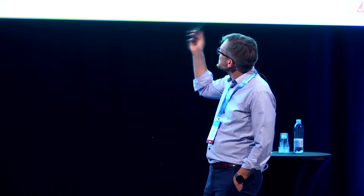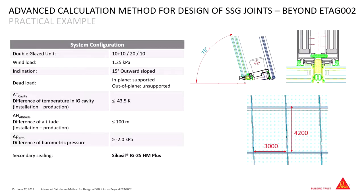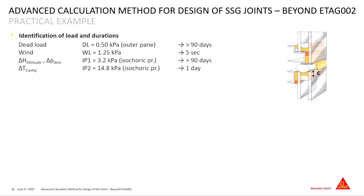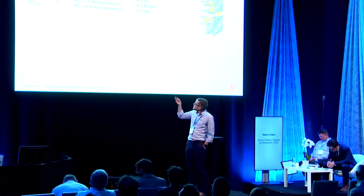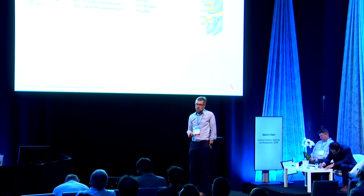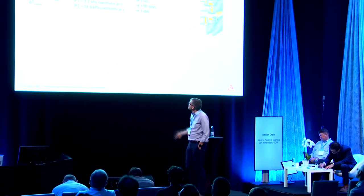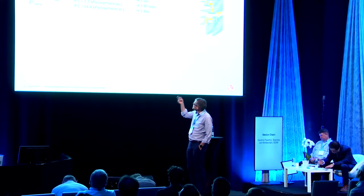As an example — just very quickly — insulating glass, outward sloped at 15 degrees, so at the end of the day it's outside of the standard, with some additional values for the climatic load. As a repetition of the method: first, checking the identification of loads and their duration. Loads we have are dead load, wind load, and different kinds of climatic effects acting on the joint, on the glass, and then on the joint as well.